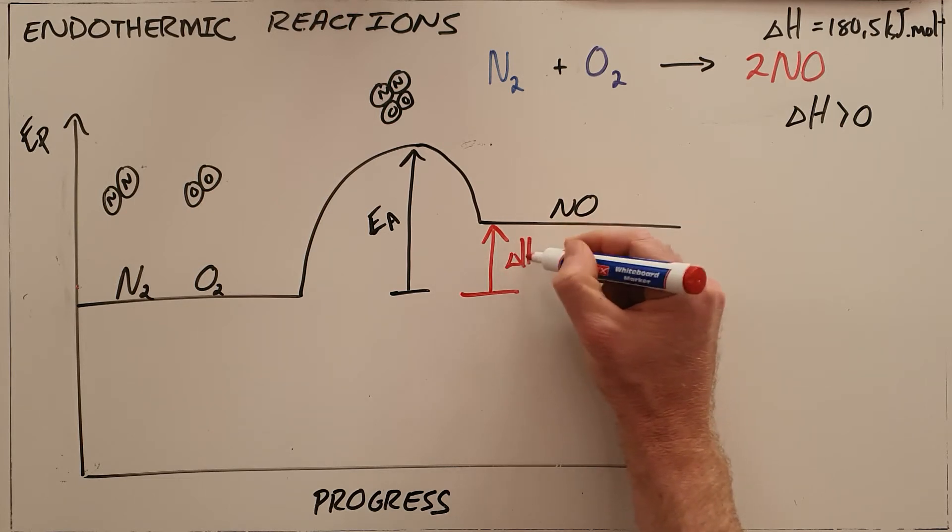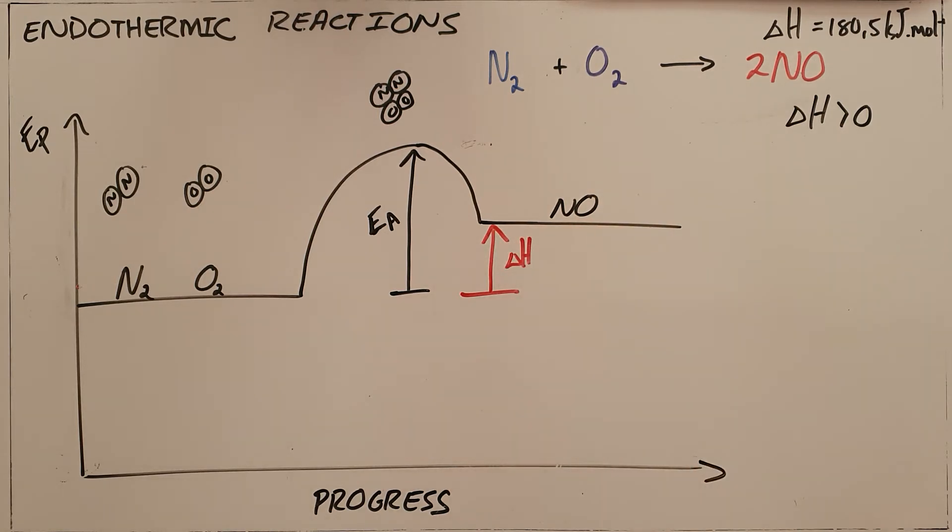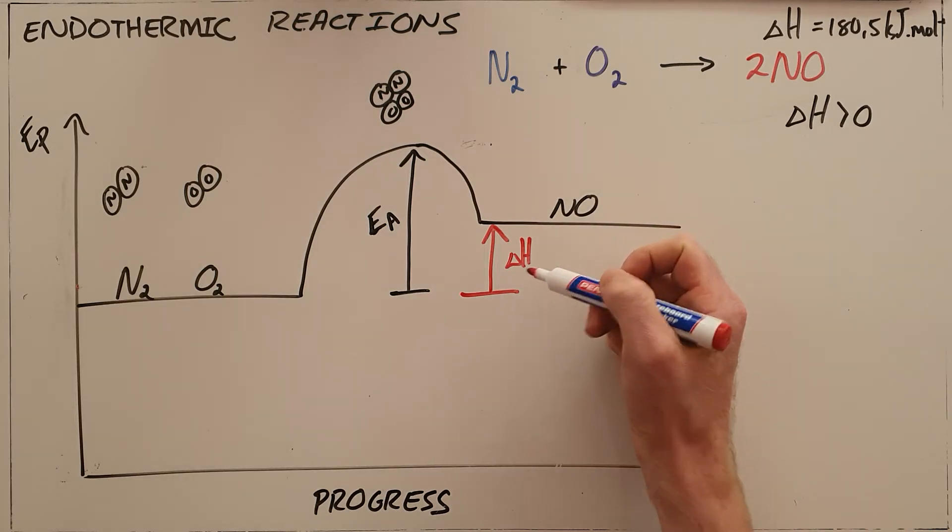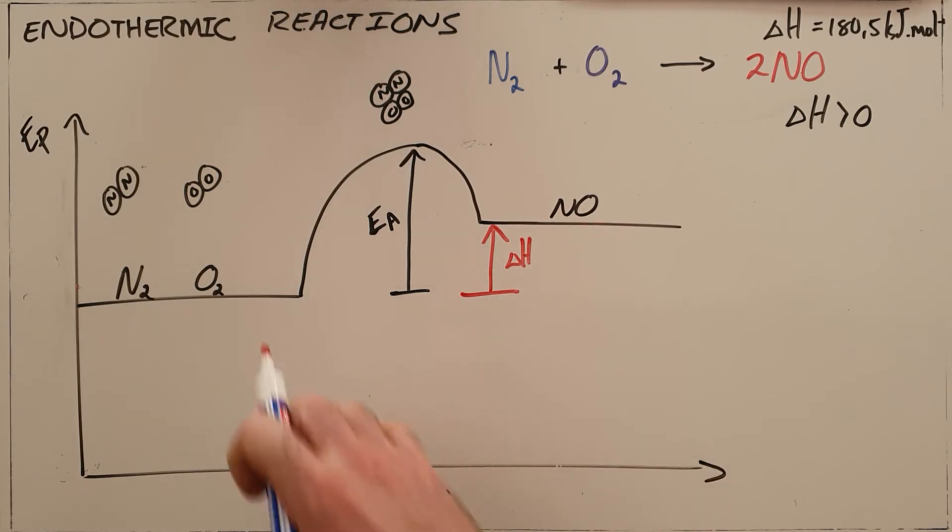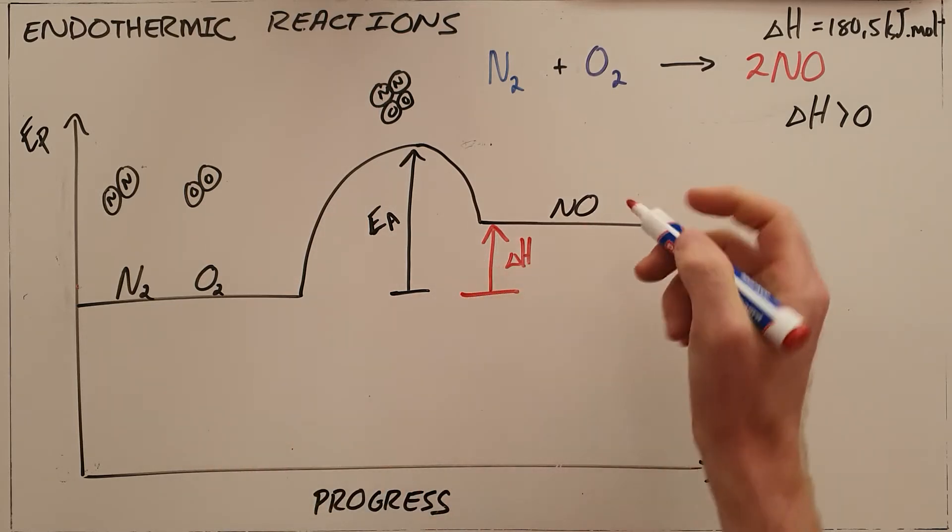The enthalpy is the heat of the reaction. What this is telling us is that in every reaction that happens, a certain amount of heat is taken in in order to form nitrogen monoxide.